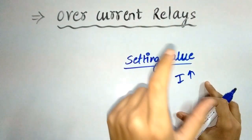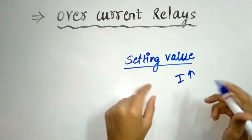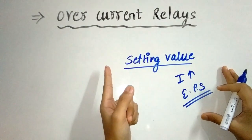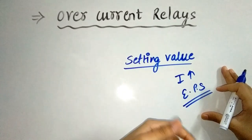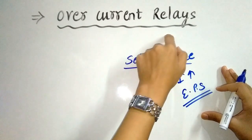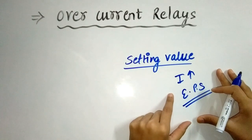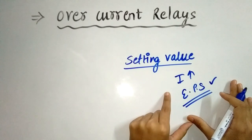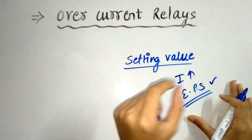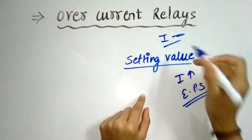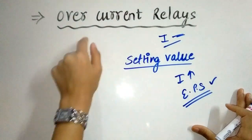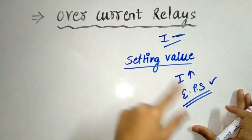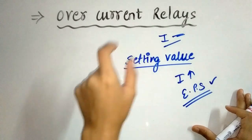Overcurrent protection, or overcurrent relays, protect electrical power systems. They protect against different faults such as ground faults or short circuits, which are caused by excessive current. In overcurrent relays, the actuating quantity is only current — there is only one current-operated element, and no voltage coil is required to construct these protective relays.